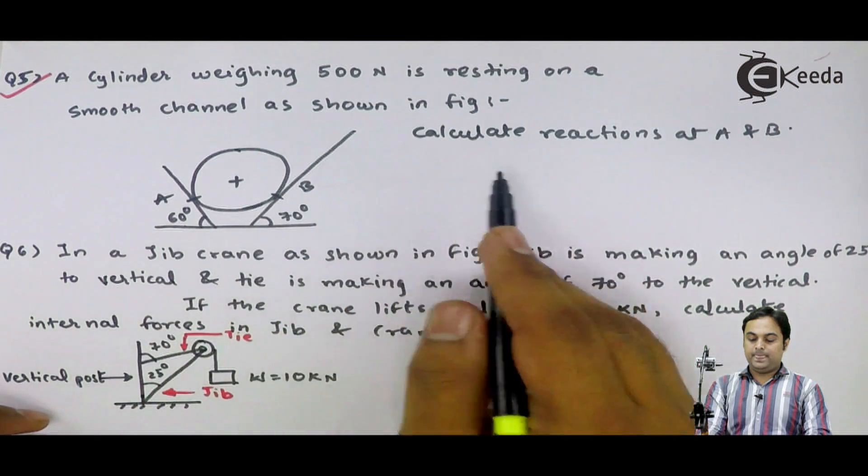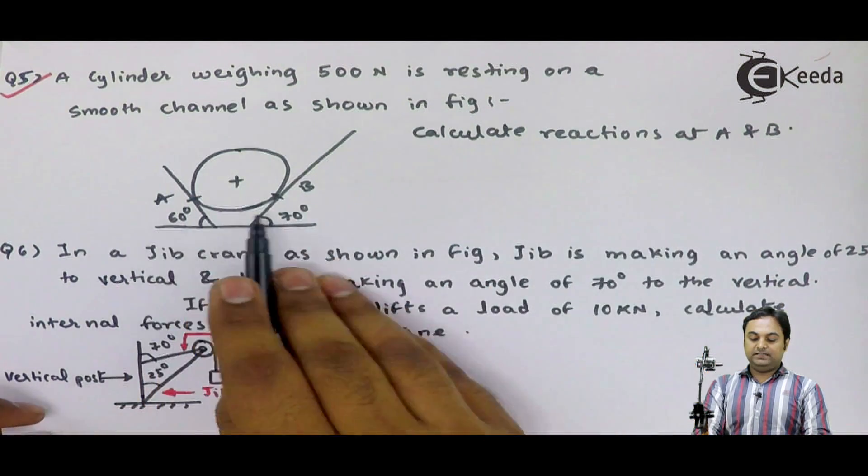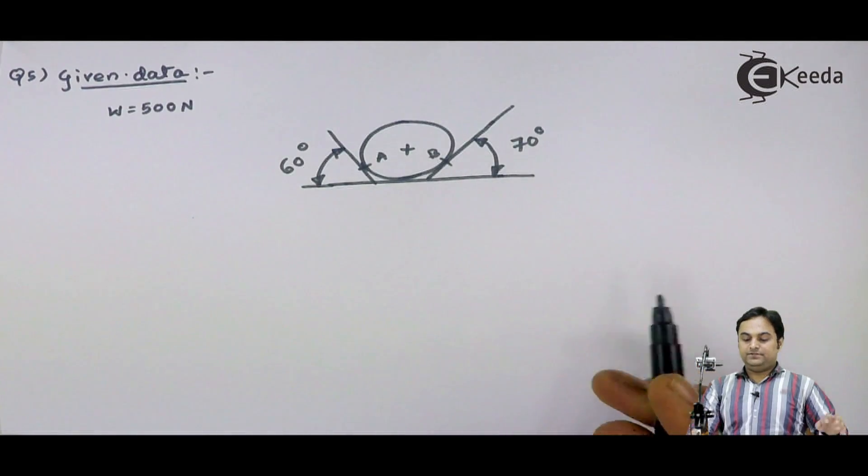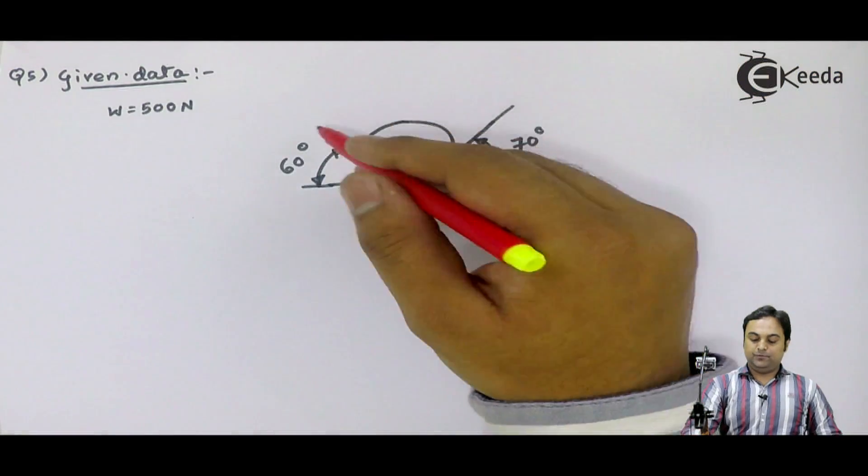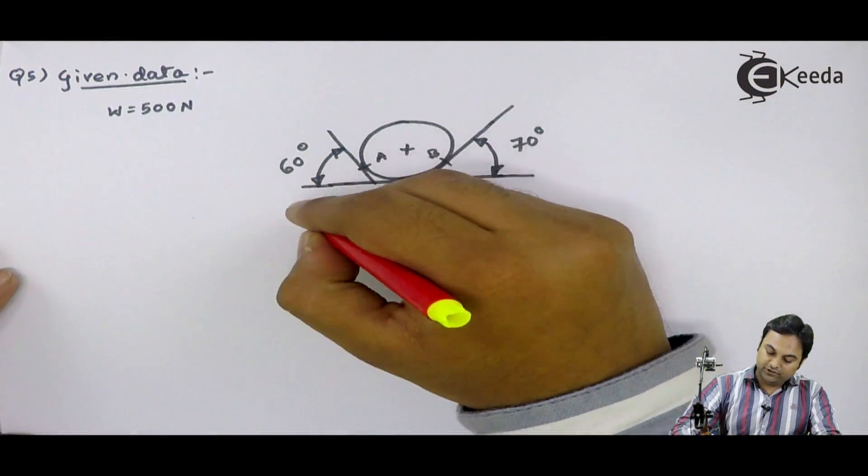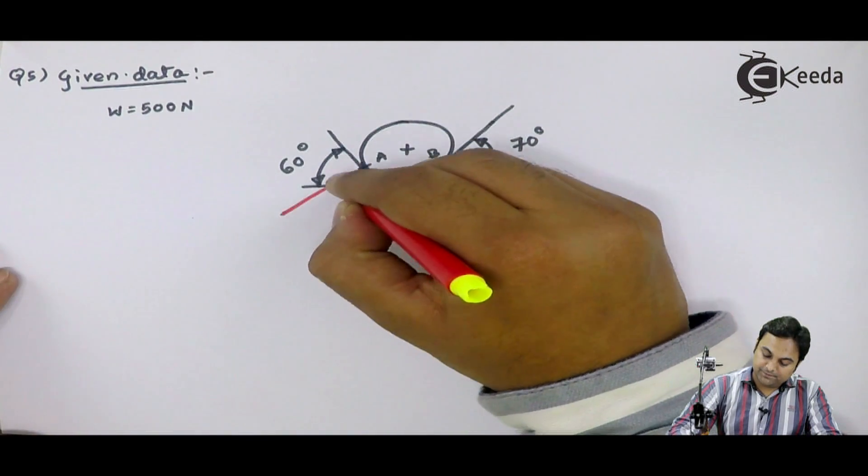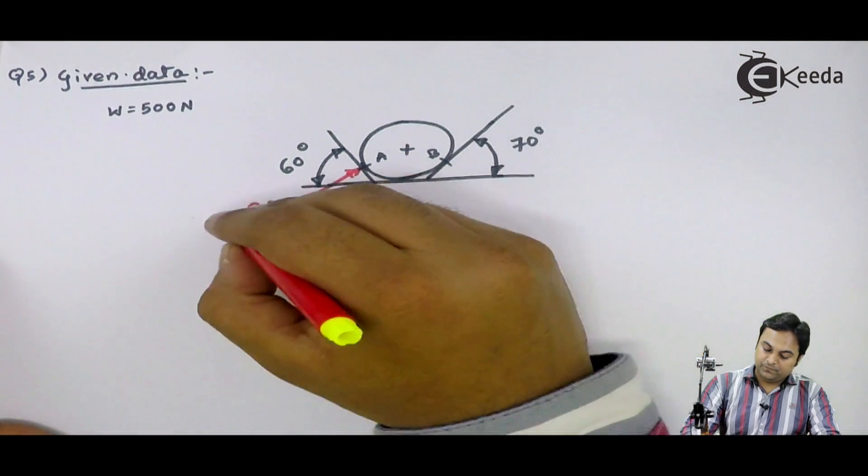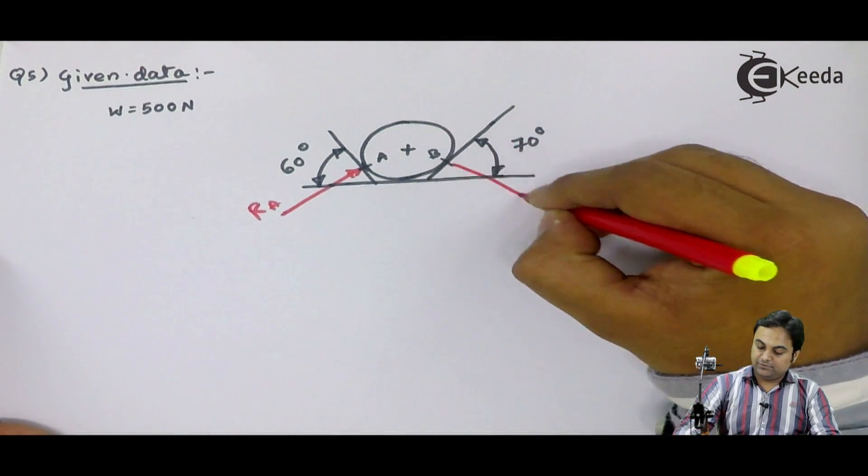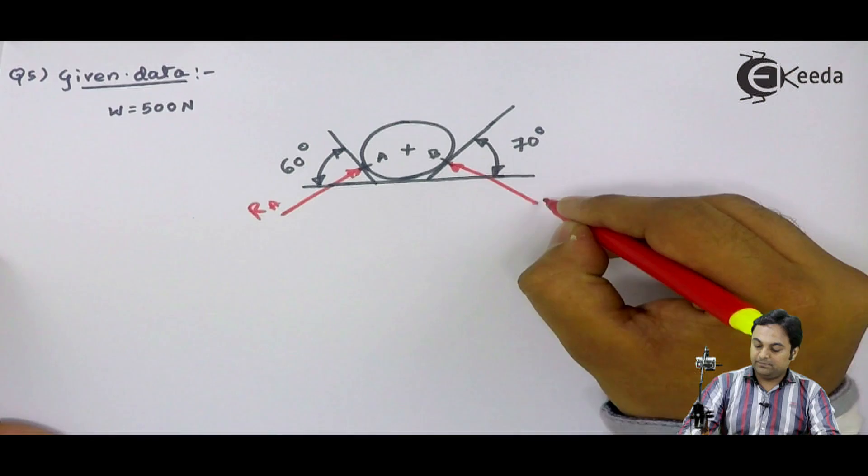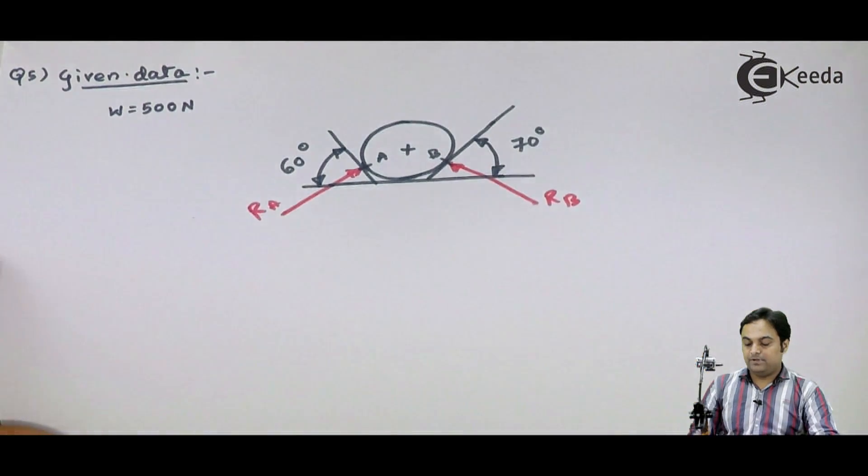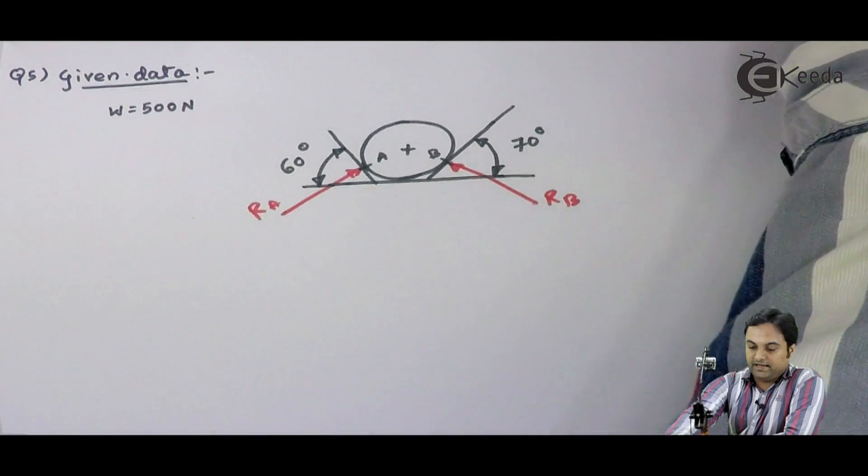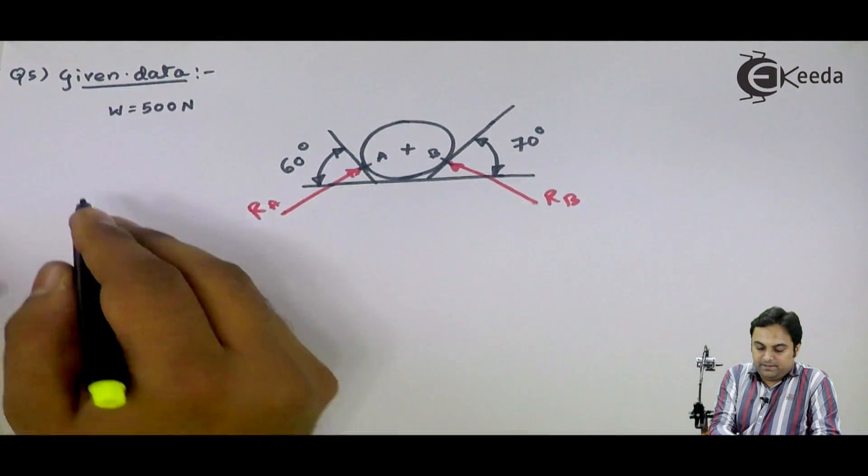Here we have smooth channel at A and B. Calculate reactions at A and B means here because of the supports, reaction would be offered in the perpendicular direction at point A. I will call this as RA. Then again a reaction would be there in the perpendicular direction at B. I will call this as RB. Here also we have to calculate reactions at A and reaction at B.